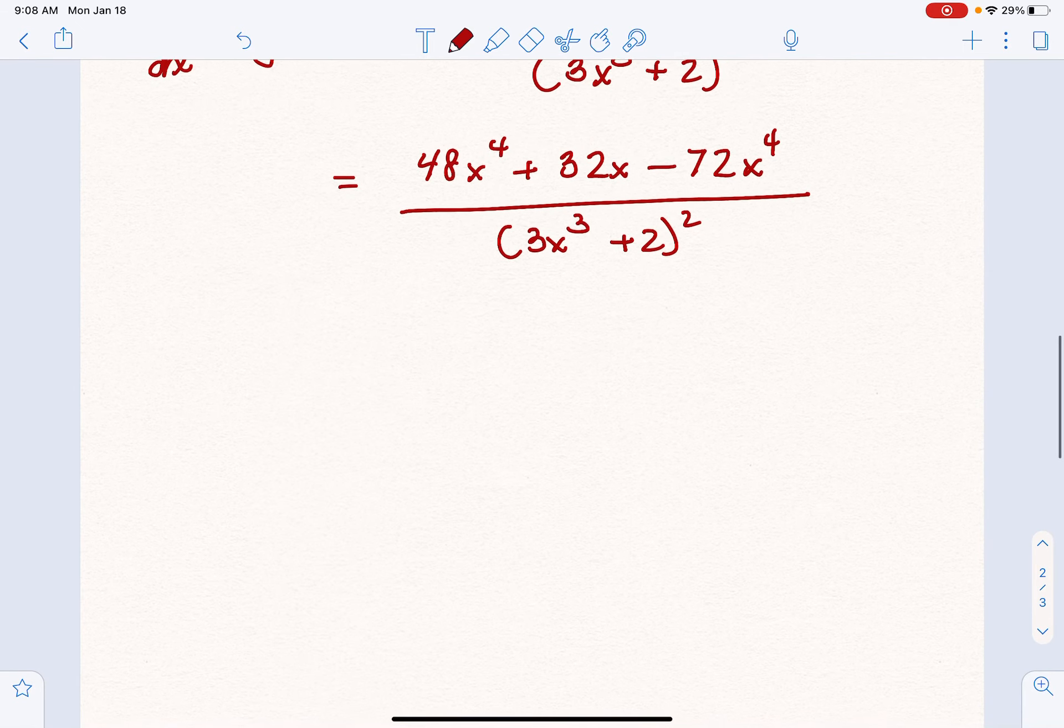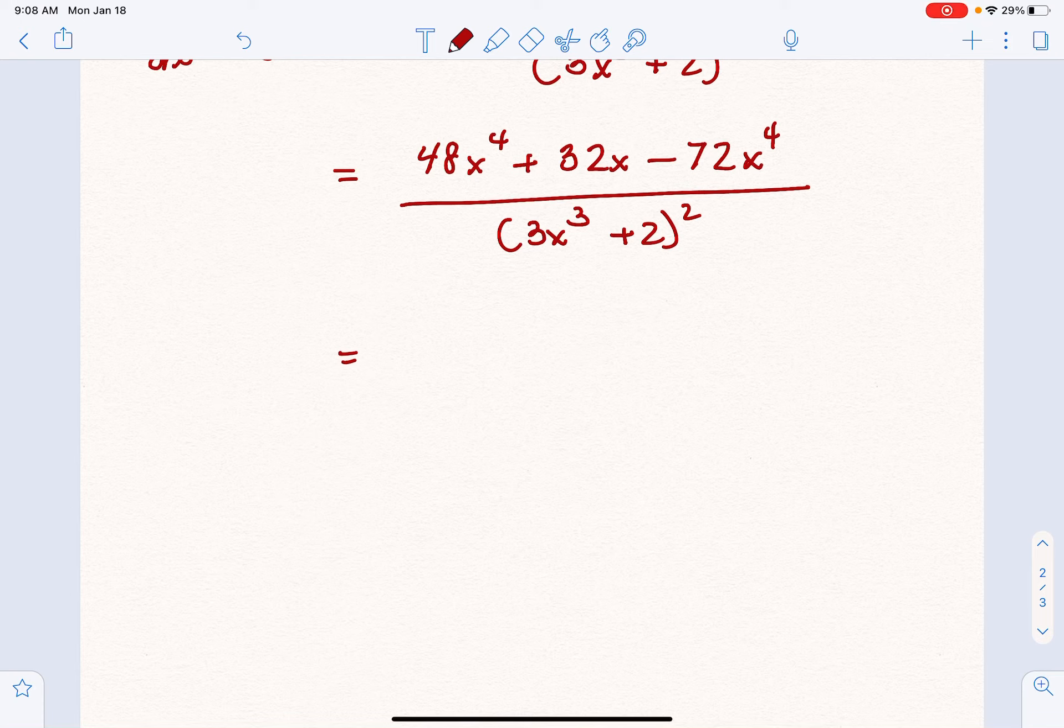Last but not least, just combine like terms in the numerator. I'm going to write the 32x first (you don't have to, of course), because now we're going to have a minus 24x⁴, just to make it look a little bit prettier.